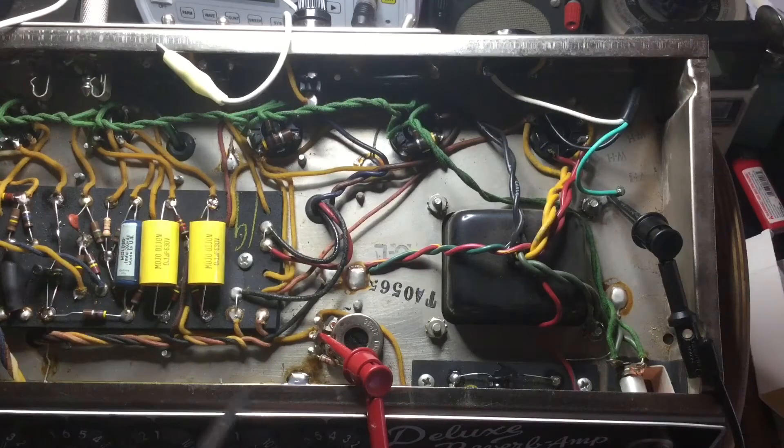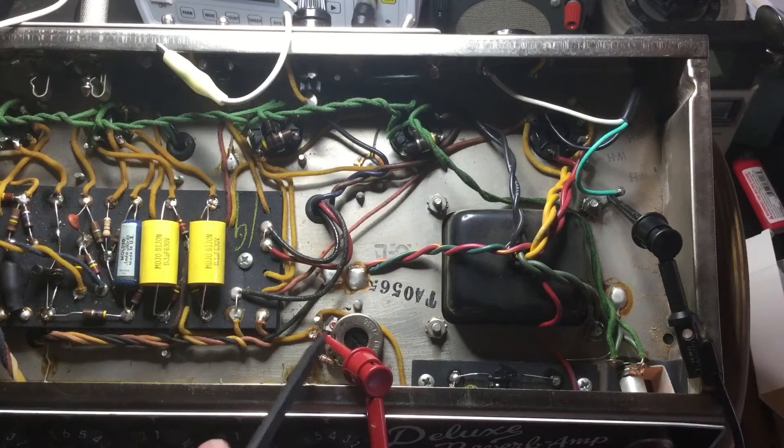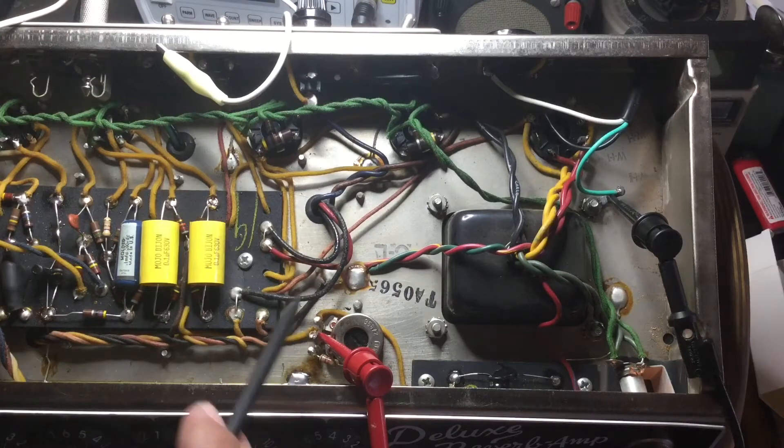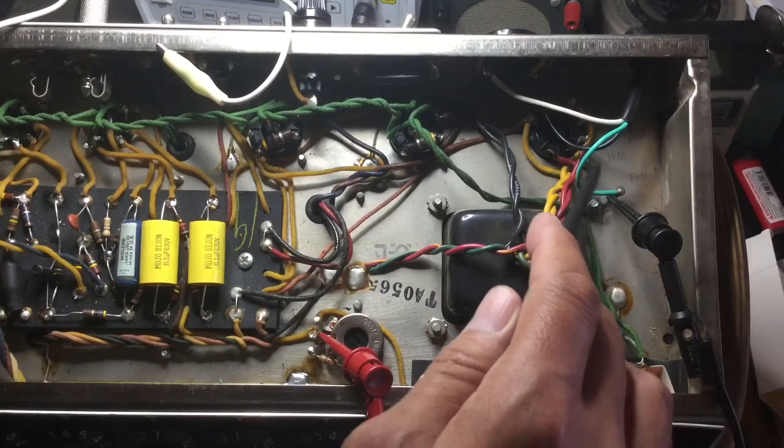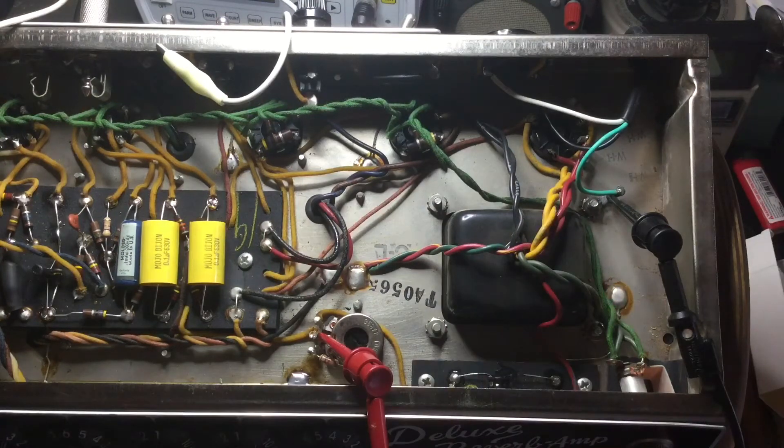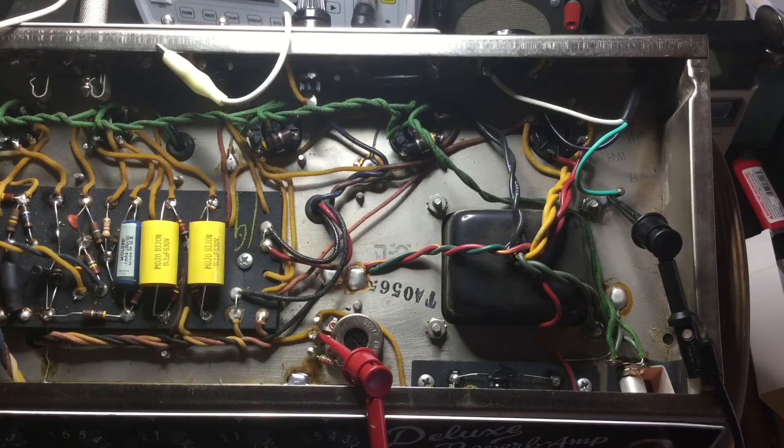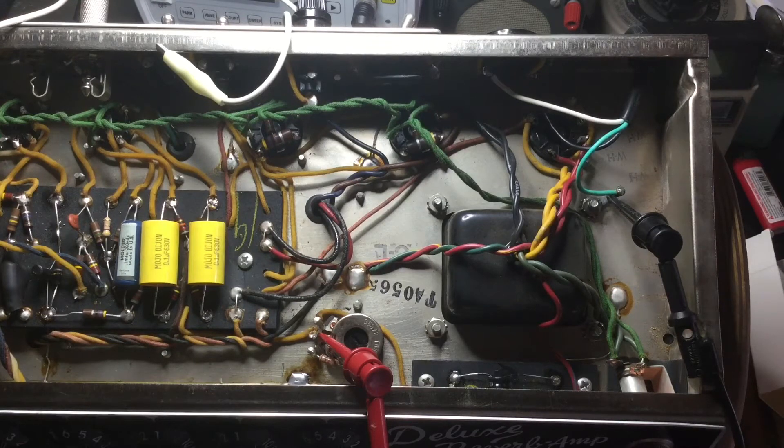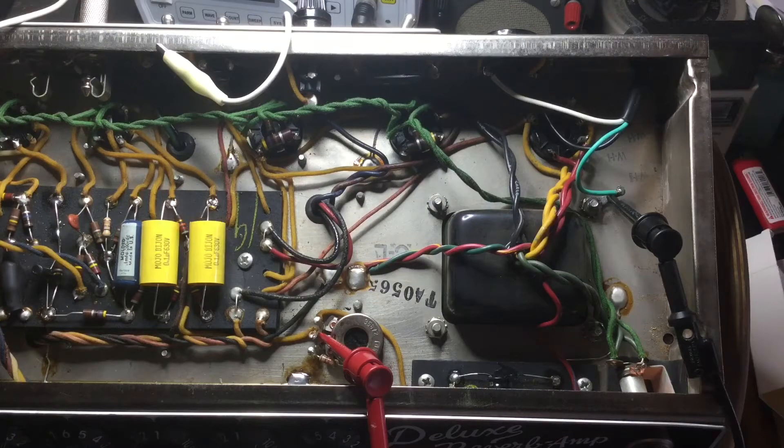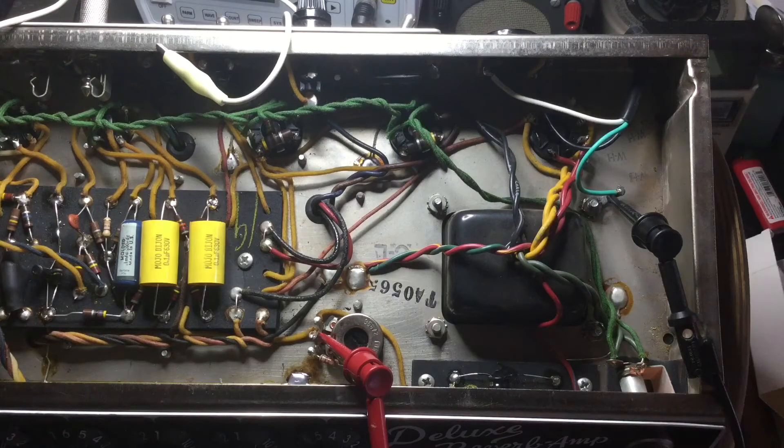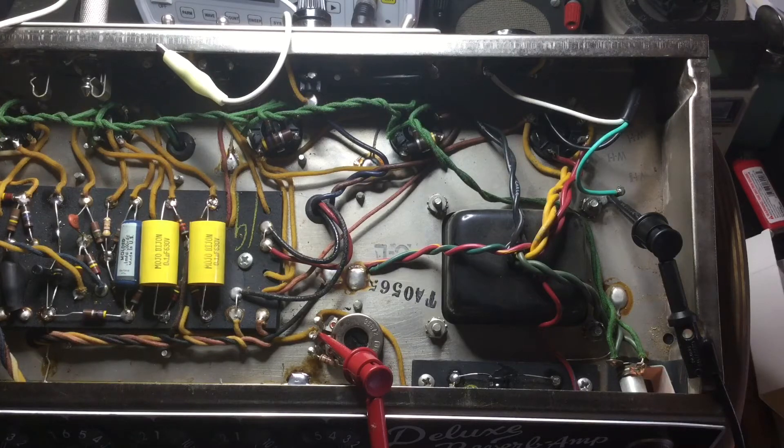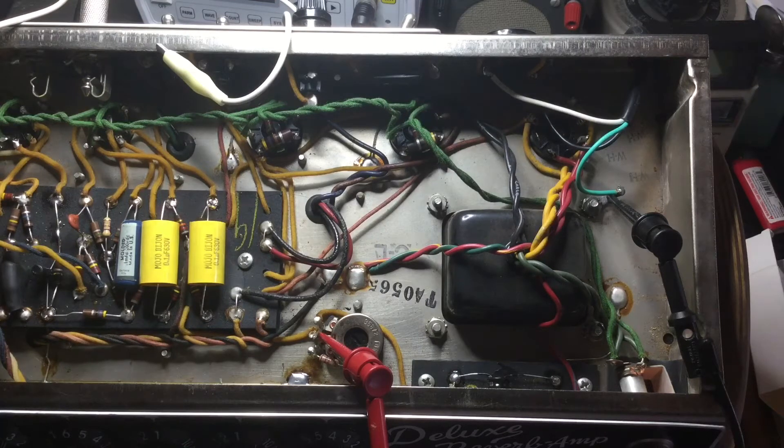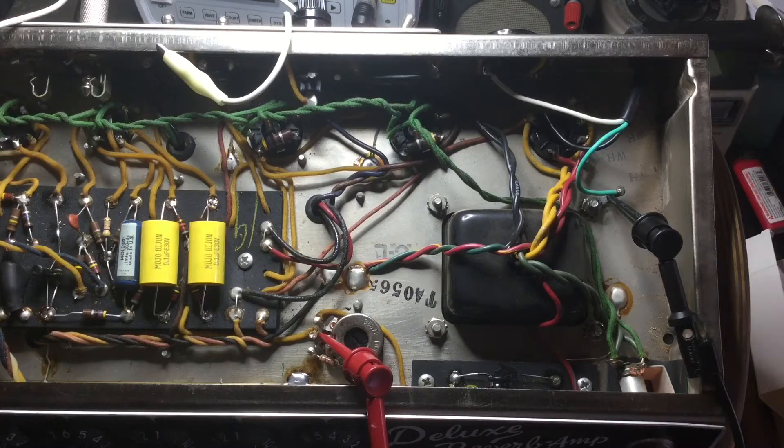So right now I'm setting the bias. I have my positive probe from my digital voltmeter attached here at this bias pot. And then ground is going to the main ground chassis. And I'm looking for negative 35 volts. I've already sent a one kilohertz sine wave injected into the amplifier and looked at the crossover distortion on the oscilloscope and negative 35 is fine. It's a good way to bias this particular Fender Deluxe. This is a 1965 Fender Deluxe.